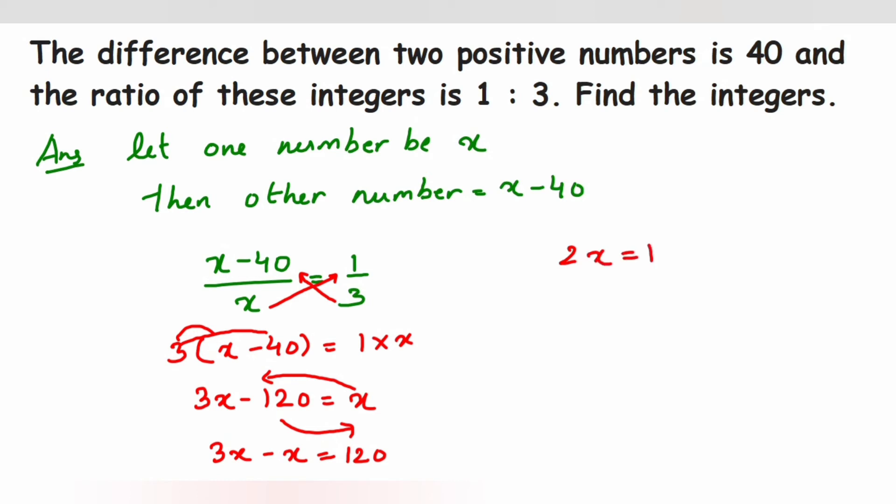So 2x equals 120. Now we'll isolate the variable, we don't want this 2 here, we're going to transpose 2 to the other side. From here we can write down x equals 120 upon 2. Now cancel it, we'll get 60.